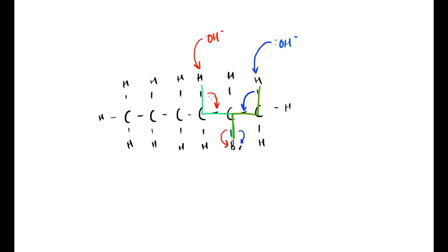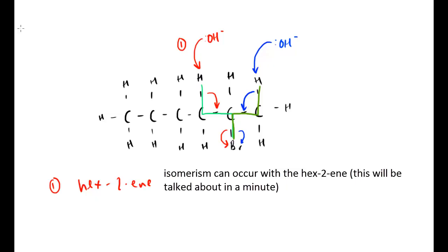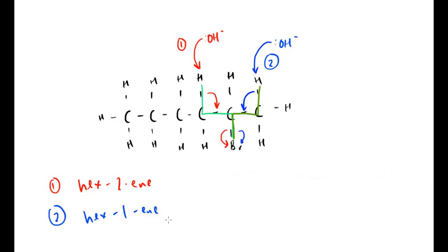So there's nothing to stop us producing either in this first example here, hex-2-ene, ultimately. Or in our second example here, hex-1-ene. And there's no reason why we would get one rather than the other. And that's just a point to be really, really aware of there. We could get either.